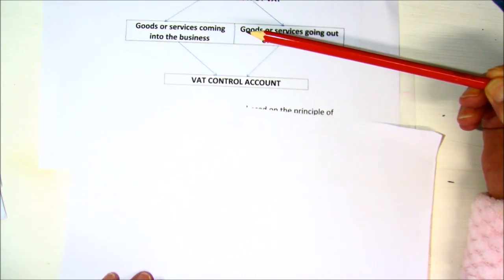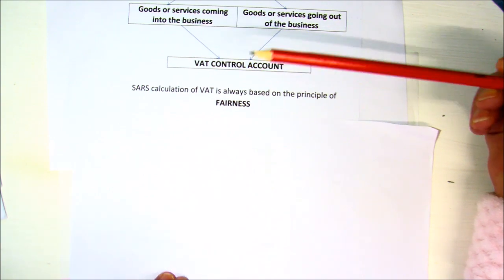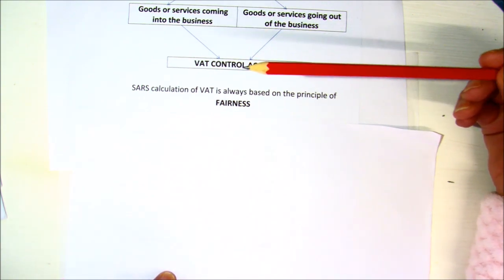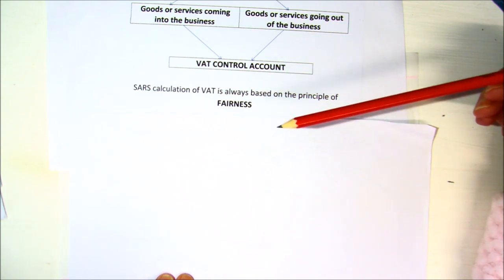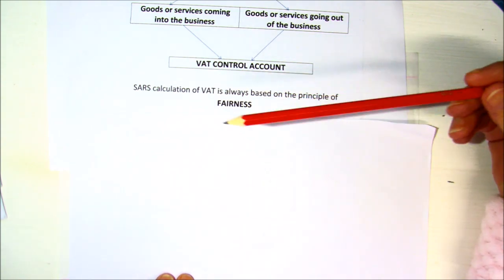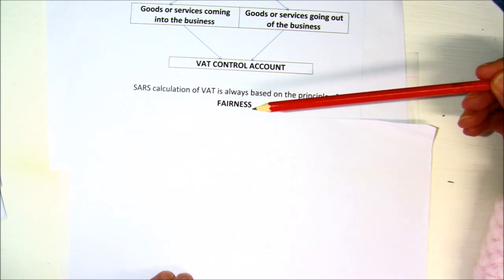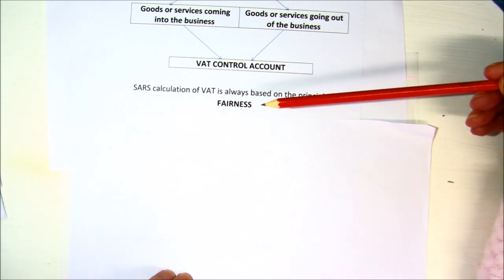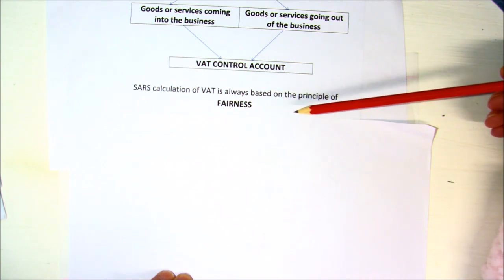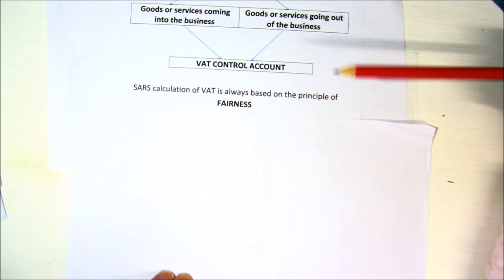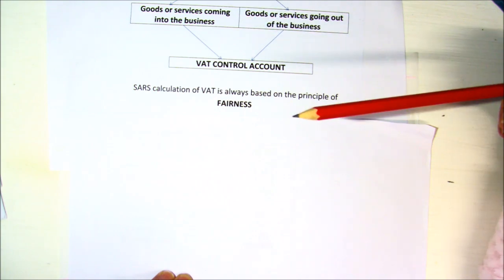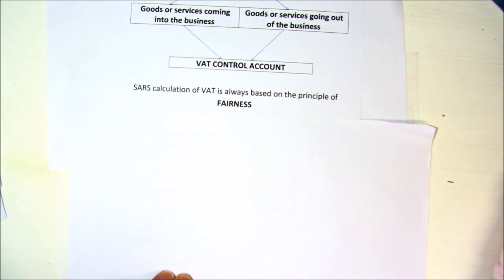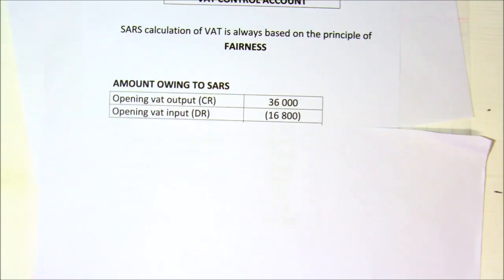When working out the VAT, there is one overriding principle with SARS, and that is that everything must be fair. SARS does not expect you to pay VAT on something that you haven't yourself received. However, if you have legally bought goods for your business, they will refund you that VAT. Keep that in mind as we go through some examples of fairness.